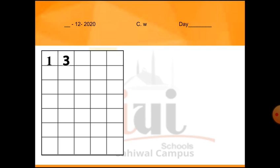Aapne 13 write karna hai mere saath, neeche neeche boxes mein. Jahan teacher ne dots lagaye hue hain wahan write karna hai, aur aapka koi bhi word line se bahar nahi hoga — box ke andar write karenge aur dots se kaam karna start karenge. Agar aapko kuch bhi samajh na aaye, aapne apni video ko pause karna hai, teacher ke saath pehle us ko write karna hai, phir dubara video chala ke next line write karni hai. Theek hai, ab video pause karein aur one, three — thirteen ki writing write karein. Sab ne 13 write kar liya.